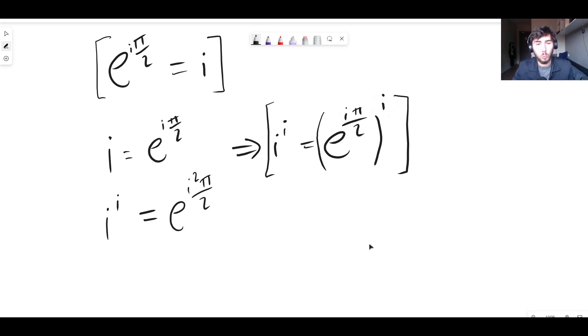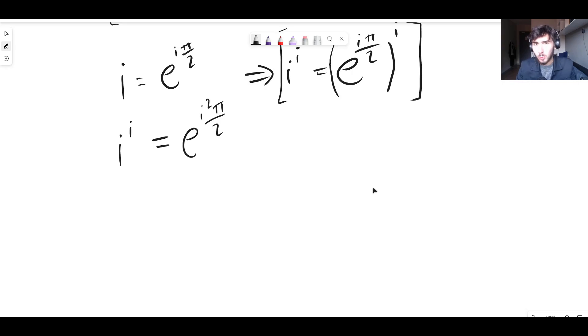Now what we can do is, by definition, what is i squared? i is the square root of minus one. So I'll rewrite this, i to the i is equal to, if i is the square root of minus one, then by definition, i squared is just minus one, which means that i to the i is e to the power of, the i squared turns into a minus one, so we get minus pi on two.